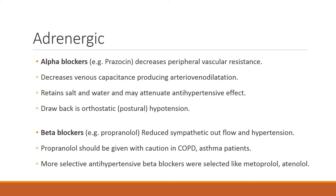Venous capacitance is also reduced by producing arterial and venous dilation — it dilates the arteries as well as veins. A major drawback is that it retains water and salt, which attenuates the anti-hypertensive effect. Water retention and salt retention are the main drawbacks of these alpha blockers.